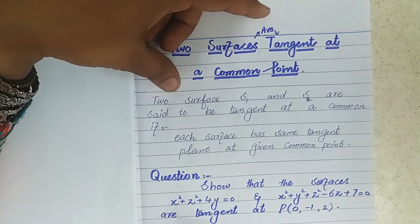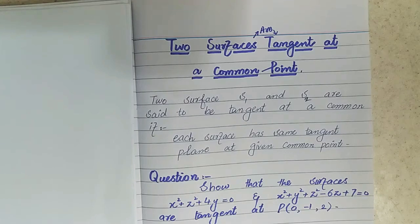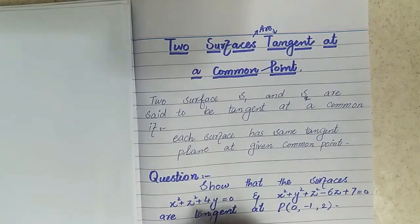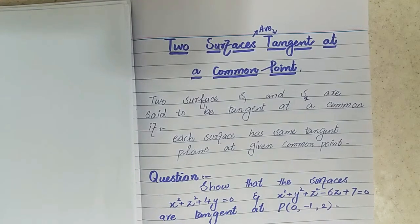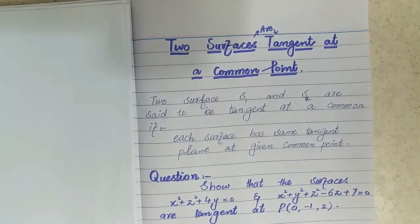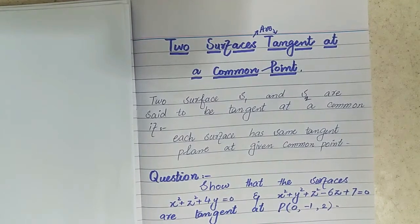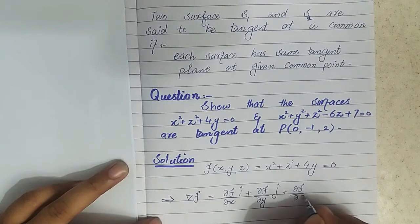To solve this question we have to find the equation of the tangent for both surfaces at the given point. We know that for surface 1, f(x, y, z) = x² + z² + 4y = 0. We have to find ∇f, that is: partial f over partial x times i, plus partial f over partial y times j, plus partial f over partial z times k.